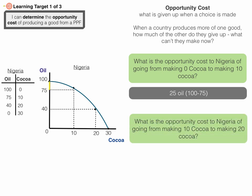What is the opportunity cost to Nigeria of going from making 10 cocoa to making 20 cocoa? That's 10 additional cocoa. At 10 cocoa they're making 75 oil, and at 20 cocoa they would be making 40 barrels of oil. So Nigeria gives up 35 barrels of oil — and we can see that on the graph with the yellow line.